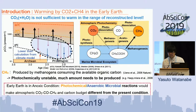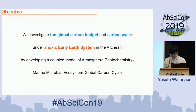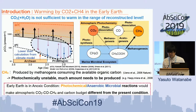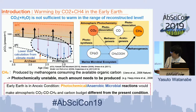Another greenhouse gas that is considered to compensate the insufficient greenhouse warming is methane. Methane is produced by methanogens in the early ocean, and also by microbiology in the early ocean decomposing organic carbon. However, methane is a highly photochemically reactive species, so to achieve high methane levels in the atmosphere, a large amount of methane must be produced from the ocean. In the Archean anoxic conditions, the balance between CO2, CO, and methane was different from the present.